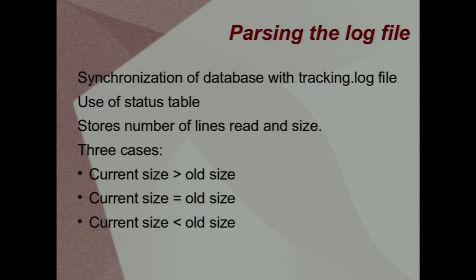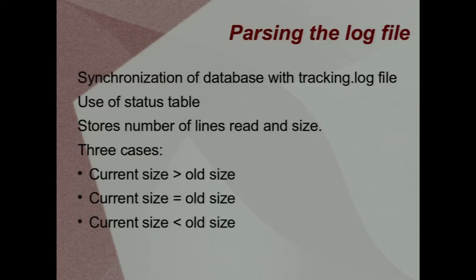When our program runs, there are three possible cases. First, when the current size is greater than the old size, it means new log entries have been added to the tracking.log file, so the program reads the number of lines already parsed from the status table, skips those entries, and parses only the newly added ones. Second, when the current size equals the old size, the file has not been modified, so the program does nothing. Third, when the current size is less than the old size, it means the file has been archived.